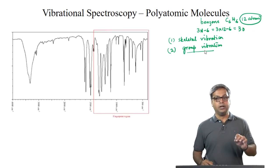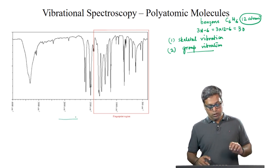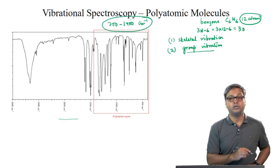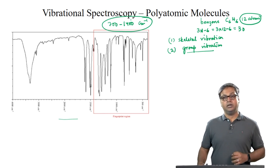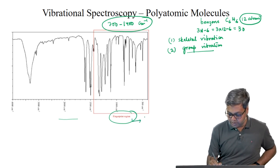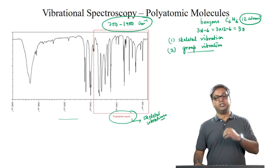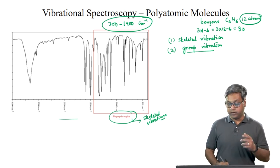Here is a typical IR spectrum of a complex molecule. The range from 700 to 1400 cm⁻¹ normally shows the skeletal vibrations. This region is also known as the fingerprint region — a region in which the identity of the molecule can be recognized merely by the appearance of the spectral pattern.